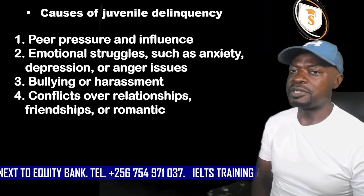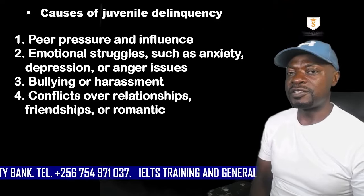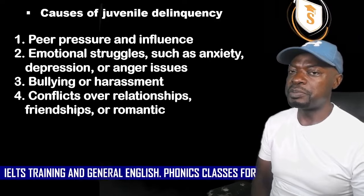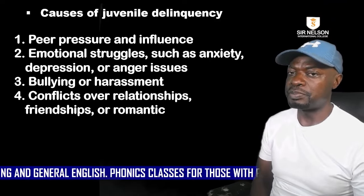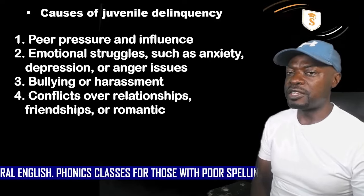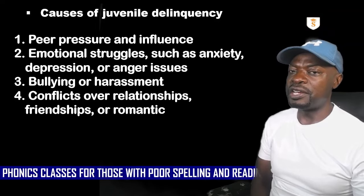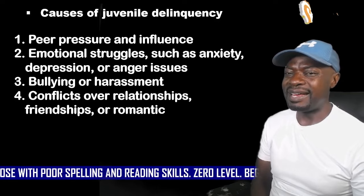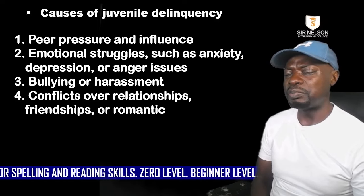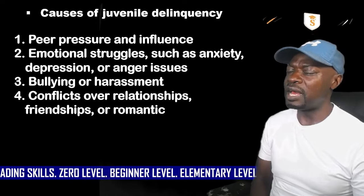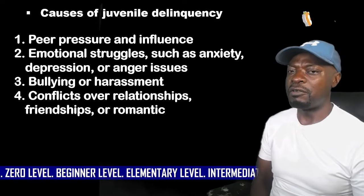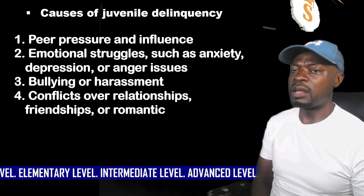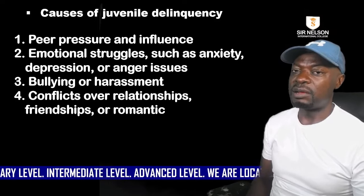Number four: conflicts over relationships — friendships or romantic relationships. Juveniles are in the process of growing up and their emotions tend to be developing, so they are also learning how to manage their conflicts, and these cause very many problems. We shall discuss this later with details.